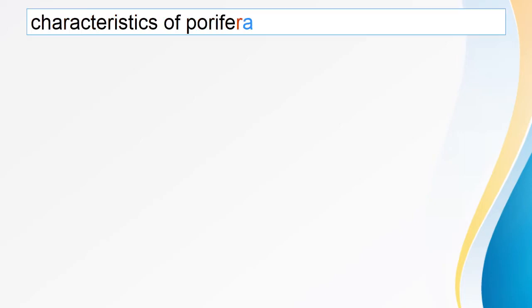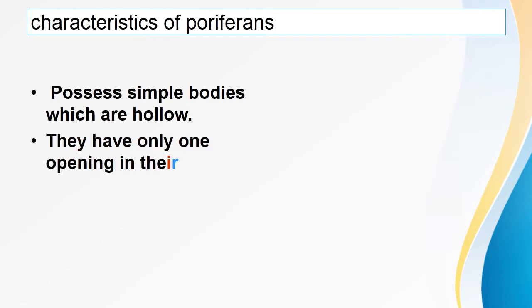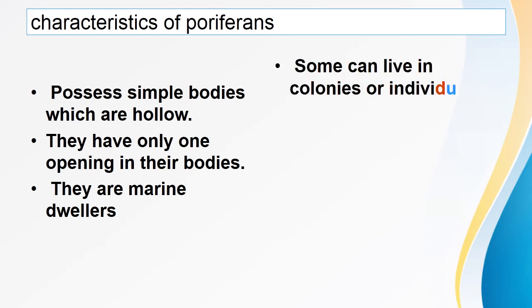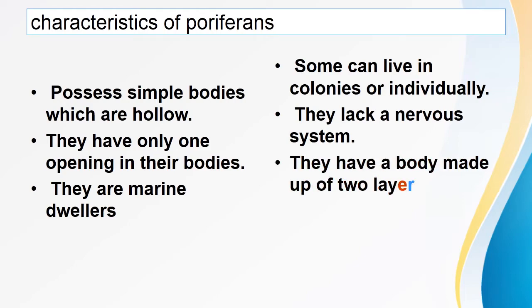Characteristics of Poriferans: they possess simple bodies which are hollow. They have only one opening in their bodies. They are marine dwellers, found in salty water like oceans and seas. They can live in colonies or individually. They lack organ systems. Their body is made up of two layers of cells.